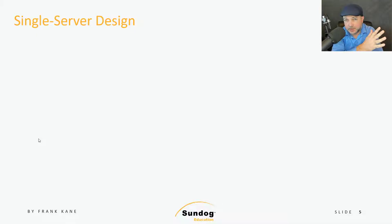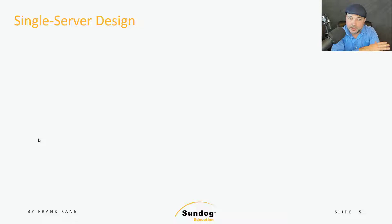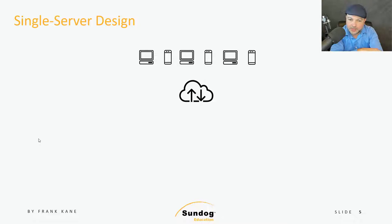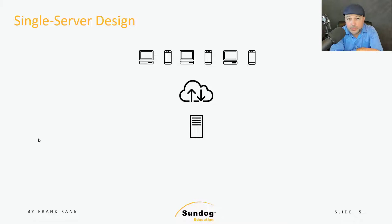Let's start by talking about a single server design. We're going to start with a design that does not scale and work our way up to one that does. In a legacy single server design, you have a bunch of clients out there on the Internet — people running their phones, laptops, or PCs — and they come through the Internet, which is what this cloud represents, and they talk to one box on the other side. My personal website, for example, is set up this way.